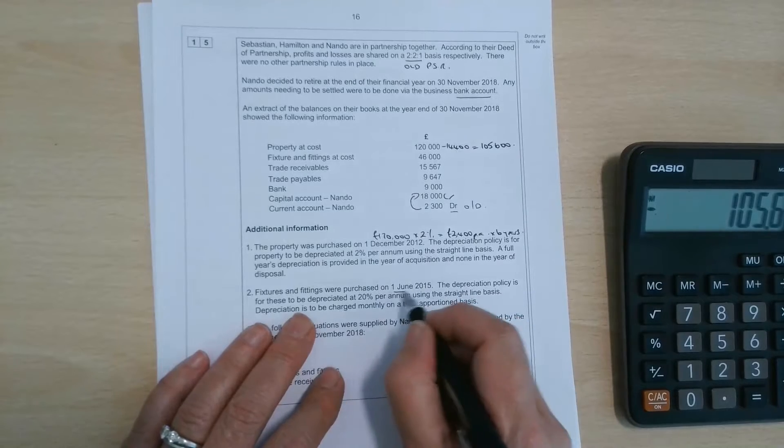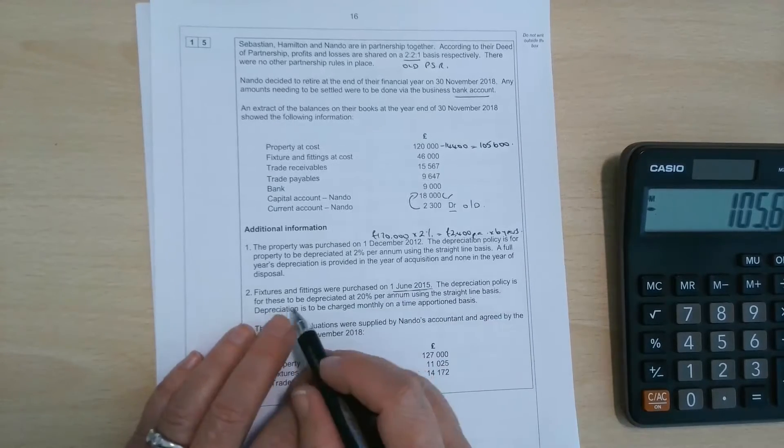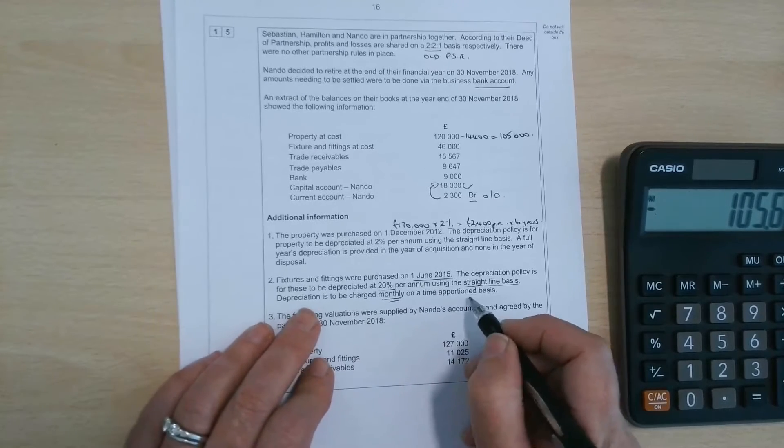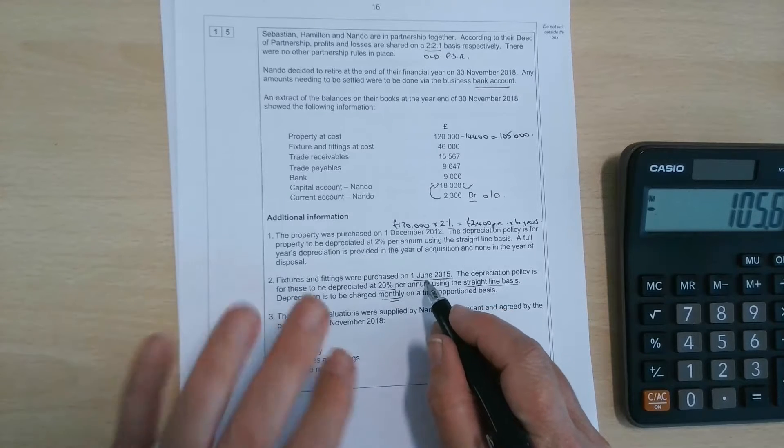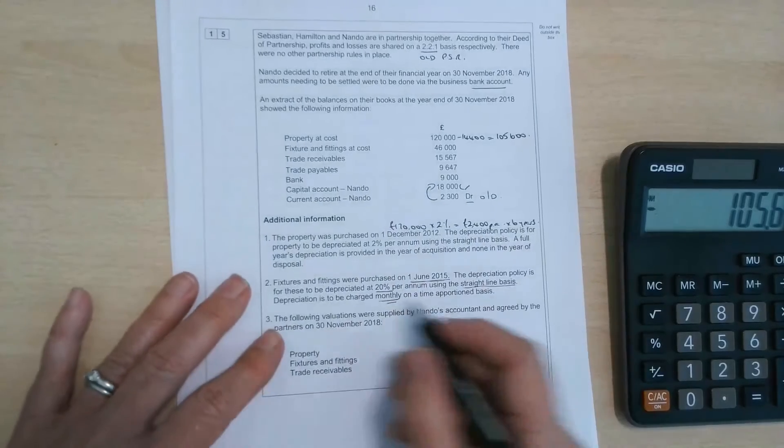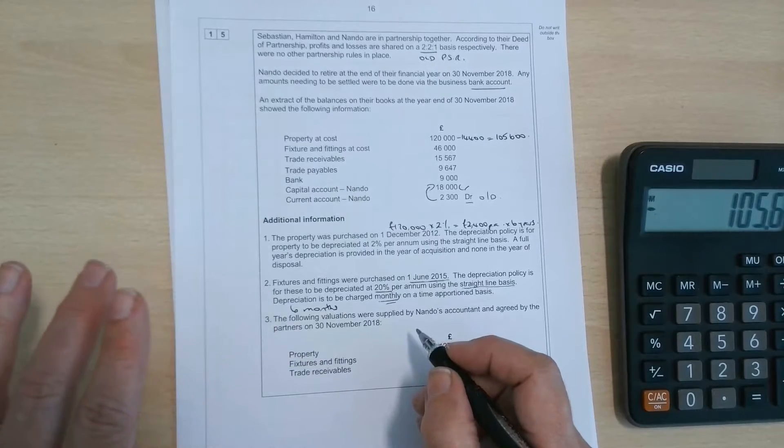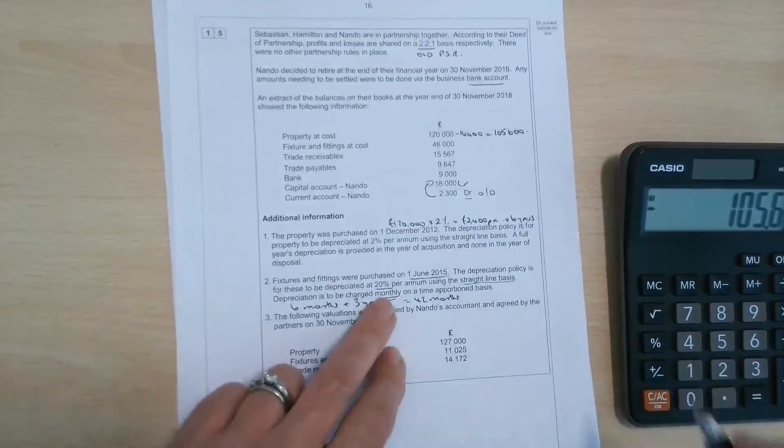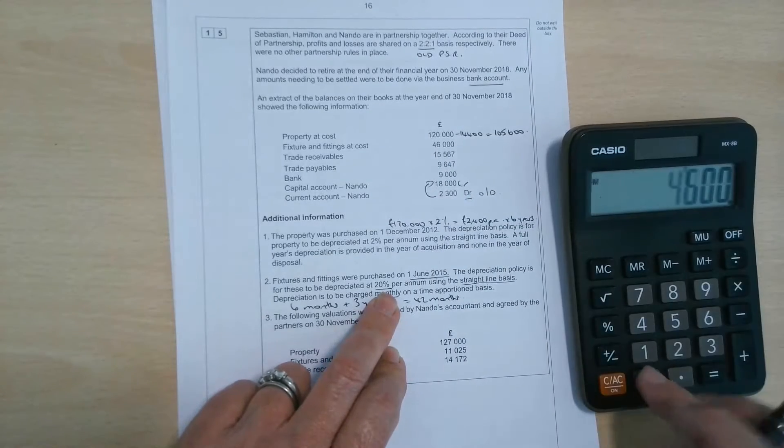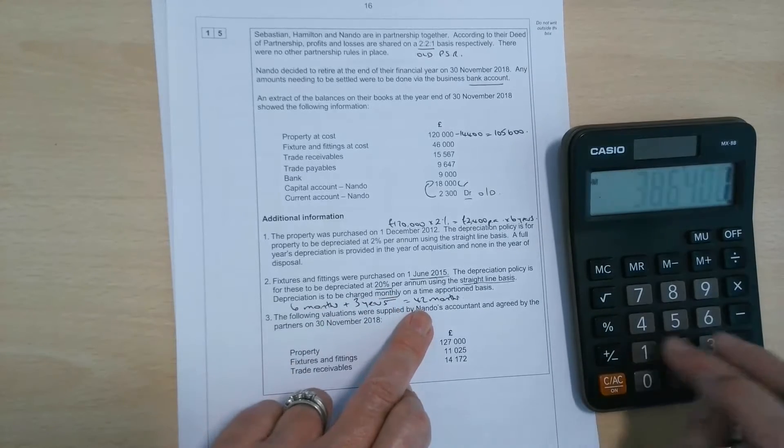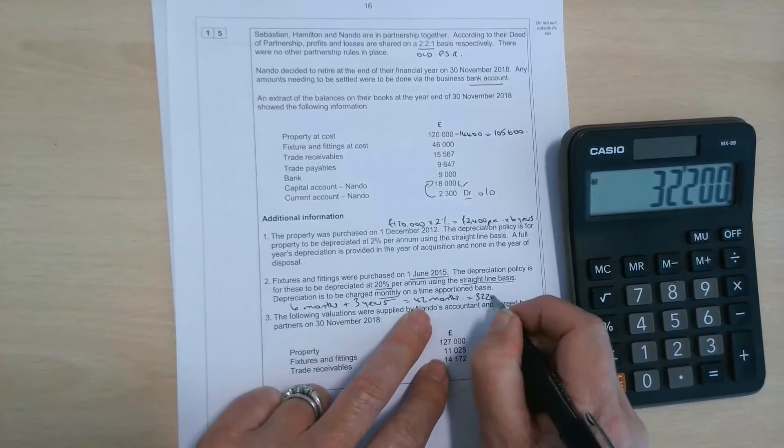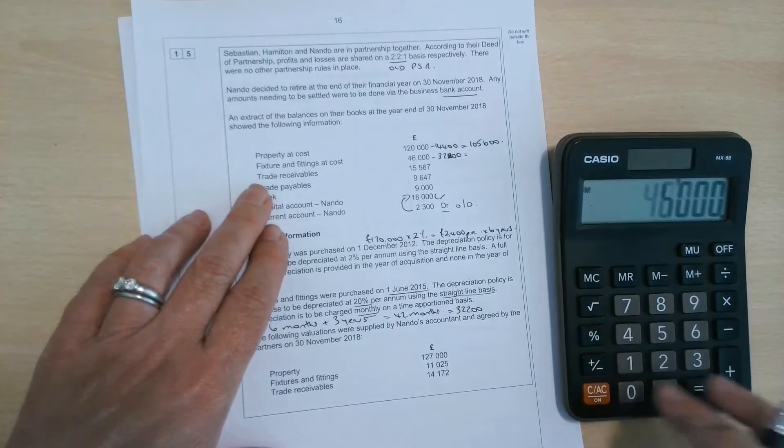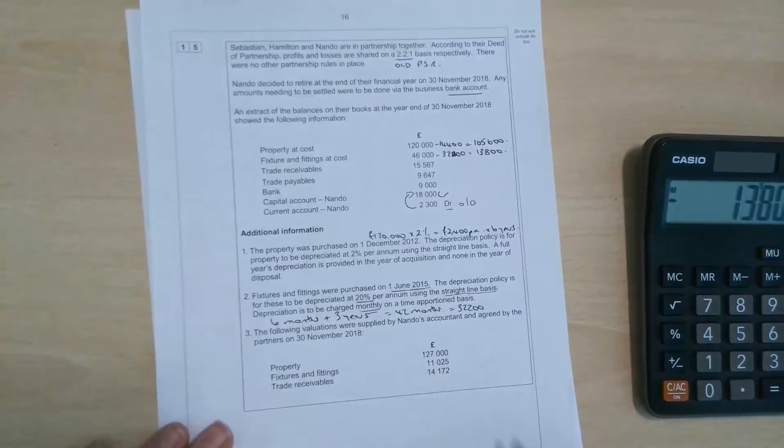We can work out the depreciation on the fixtures and fittings. They were purchased on the 1st of June 2015. Depreciation policy is for these to be depreciated at 20% per annum using the straight line basis. The depreciation is to be charged monthly on a time proportion basis. So let's work out how many months we've had these assets for. In the first year, we have them for June, July, August, September, October. So six months will take us up to November 2015, 2016, 2017, 2018 is three years. So three years is 36 months plus six means that we have those assets for 42 months. So the depreciation is going to be based on 46,000 times 20%, but we're timesing it by 42 over 12, because we've had those for three and a half years. So the depreciation is 32,200, which if we take that 32,200, gives us a net book value of 13,800.